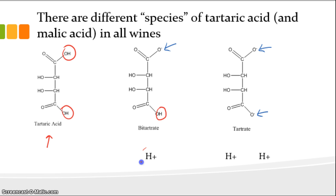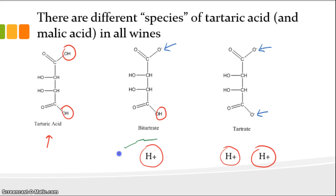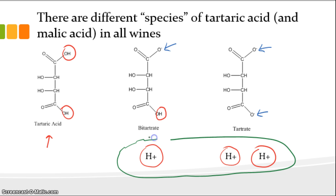We show bitartrate with that one proton lost, and tartrate has lost both acidic protons. What happens if we measure pH? pH measures just the protons that have already been released into solution. But it's not a complete measure of all the acid in your solution, because we're missing the acidic protons still attached to the bitartrate and tartaric acid species. We have more acid than that which is measured by pH only.